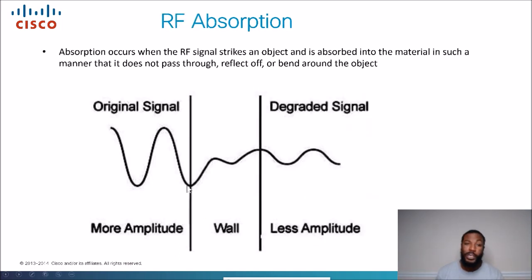RF absorption. Absorption occurs when an RF signal strikes an object and is absorbed into the material in such a manner that does not pass through or reflect off or bend around the object. So just think about noise. You're yelling at somebody. This is a very common theme here. This is how I used to, in my other videos, I used to compare networking to roads and highways. When we're talking about wifi, we're going to compare it to two people that are talking to each other. If you have obviously something between y'all, and you're trying to talk to somebody, there could be something that's blocking them. The signal is going to look like this. When you have a lot of amplitude, but if you got a wall or something like that, or a door,